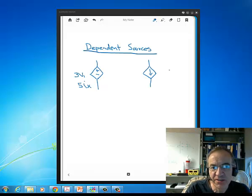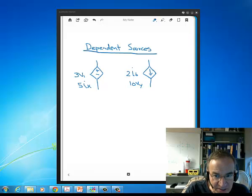Now it's similar with dependent current sources that I could have a dependent current source with value 2I6, where I6 is defined in the circuit that it's connected to. Or it could have value 10VY, where VY is a voltage defined in the circuit it's connected to. So again, the symbol tells me what kind of source it is. So this is dependent current. So it has to have units of amps. So this 10VY, that would be 10VY amps. Just like this would be 2I6 amps.